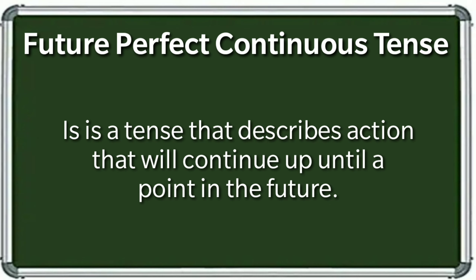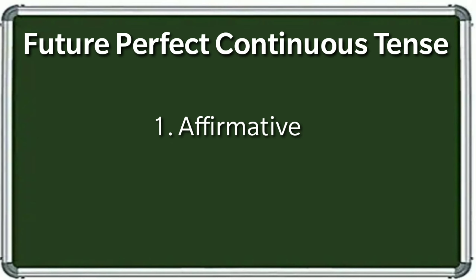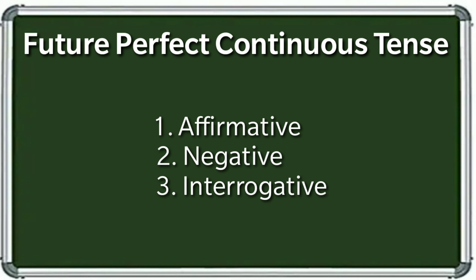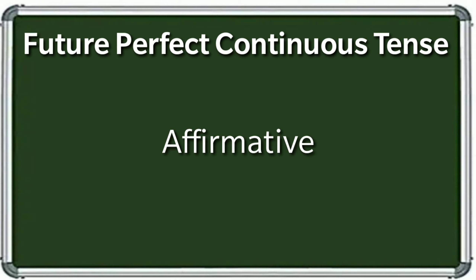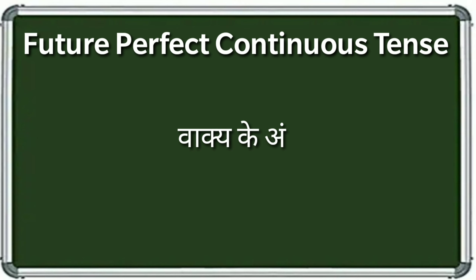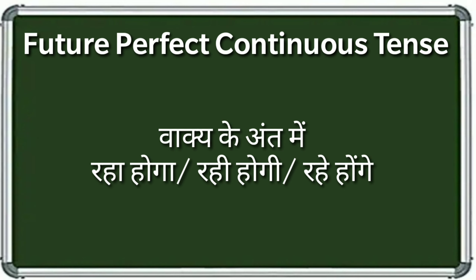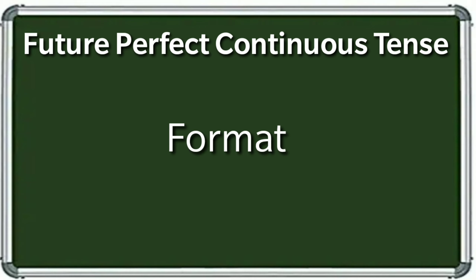Baki tenses की तरहां इस tense को भी तीन पार्ट में डिवाइड करके बहुत आराम से समझा जा सकता है — एक affirmative form, दूसरा negative form और तीसरा interrogative form. आज की वीडियो में हम इसके केवल affirmative form को समझेंगे. Affirmative form के sentences की पहचान ये है कि जब आपको हिंदी के वाक्यों के आंत में रहा होगा, रही होगी या रहे होंगे दिखाई दे, तो आप समझ लीजिए कि यहाँ पर future perfect continuous tense की बात हो रही है.